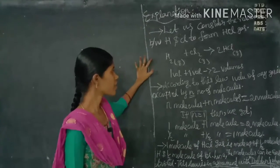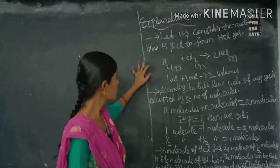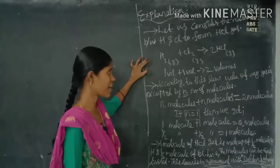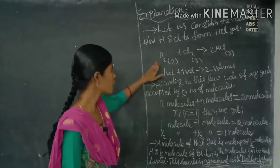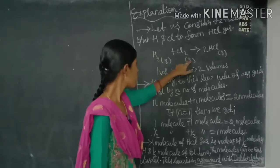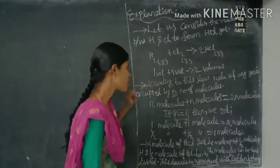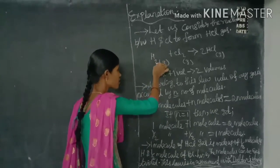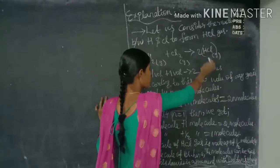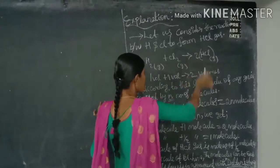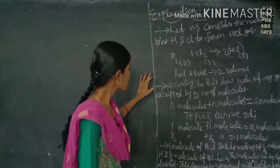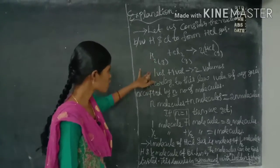Let us explain Avogadro's law with an example: the formation of HCl (hydrochloric acid). We consider the reaction between hydrogen and chlorine to form hydrogen chloride gas. Hydrogen chloride is formed using two hydrogen atoms and two chlorine atoms — both are in gaseous state. This gives two molecules of HCl since the equation must be balanced with two atoms each of hydrogen and chlorine.